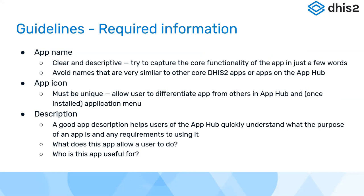Try to avoid names very similar to other apps available on the App Hub or provided by us — that way users won't be confused. Your app icon is important: a unique icon makes your app stand out on the App Hub and allows users to differentiate it from others in the application menu. It doesn't have to be a work of art — just something clear and unique. Your description is also important for users exploring what your app does. It should answer two questions: what does this app allow the user to do, and who is it useful for?